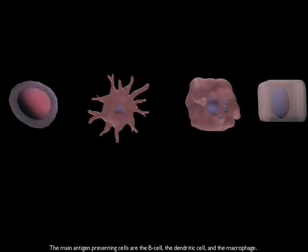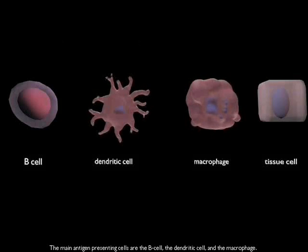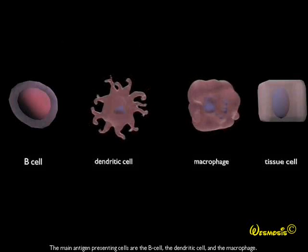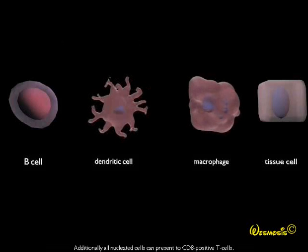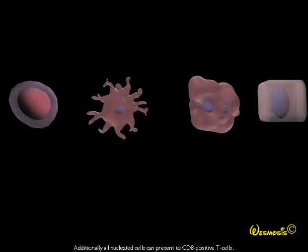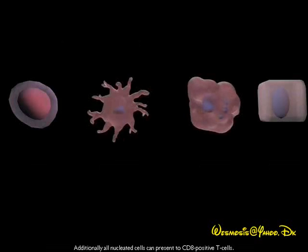The main antigen presenting cells are the B cell, the dendritic cell, and the macrophage. These cells can present antigen to CD4 positive cells. Additionally, all nucleated cells can present to CD8 positive T cells.